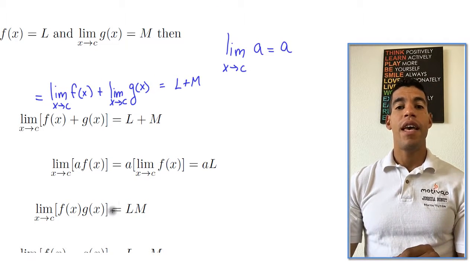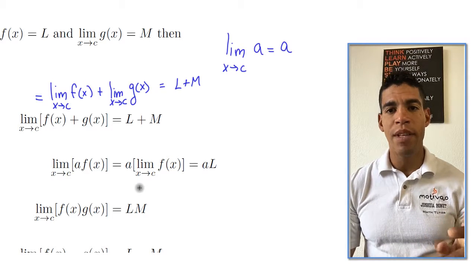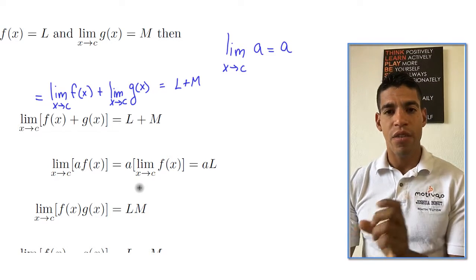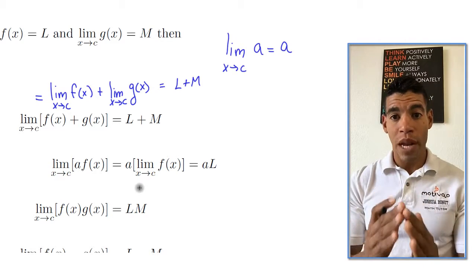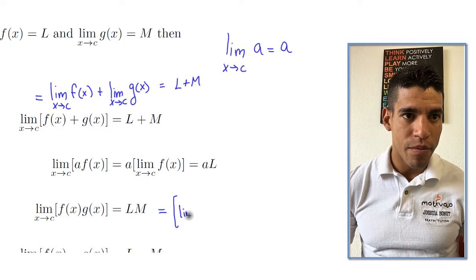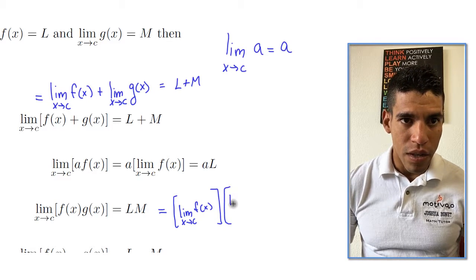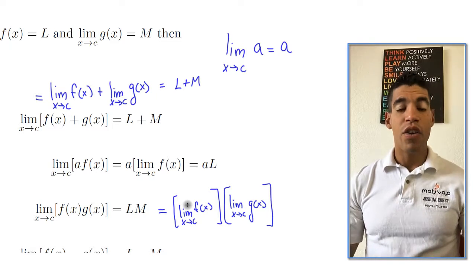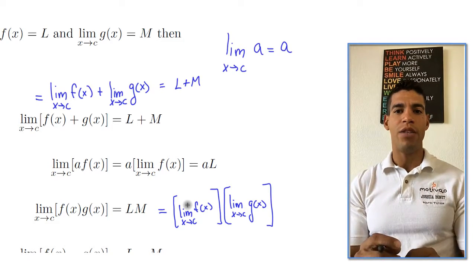This next one is not intuitive — for differentiation and integration it doesn't work this way, but for limits it does. The limit as x approaches c of f(x) times g(x) equals the two limits multiplied together. You can break the multiplication into two separate limits: the limit of f(x) times the limit of g(x), and then multiply the values.